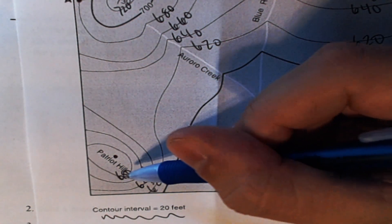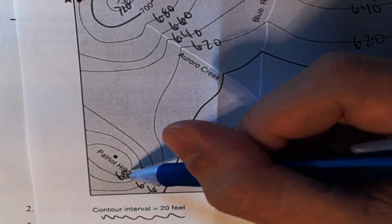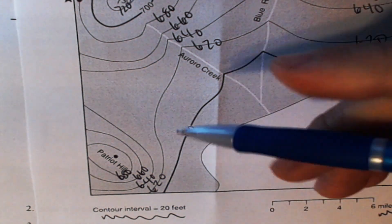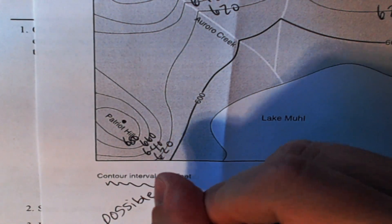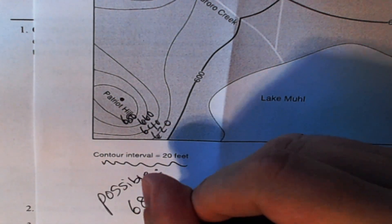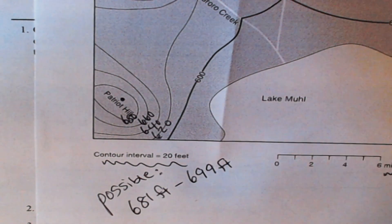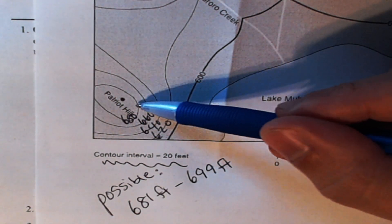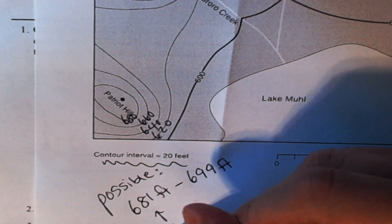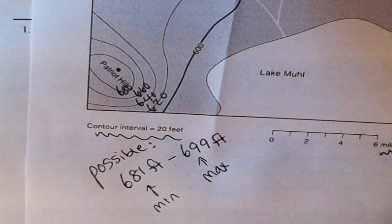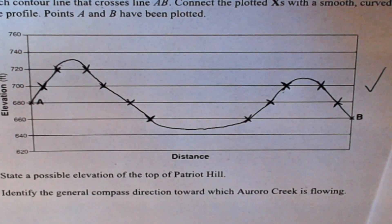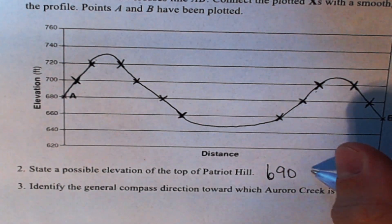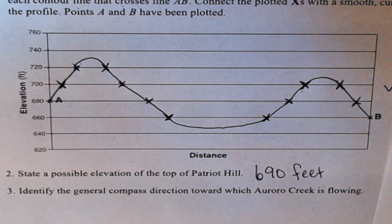And this dot is not on the 680 line. So possible elevations for the top of Patriot Hill could be anywhere from 681 feet to 699 feet. It can't be 700 because then there would be a 700 line, and it can't be 680 because then the dot would be on the line. So that's how you figure this out. This is called the minimum and this is called the maximum. So for the question it says a possible elevation, so any number between 681 and 699 would be good. So I'll pick 690 feet. Make sure you write the feet after that or else you're going to get zero credit.